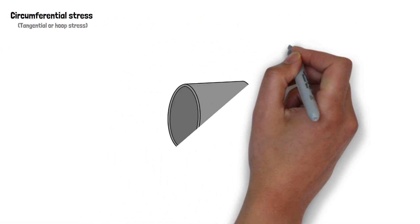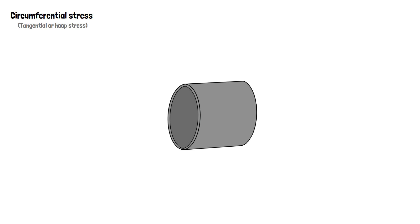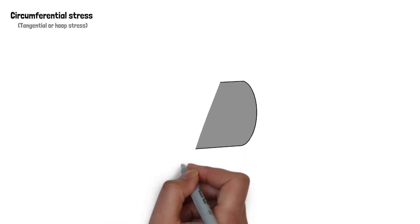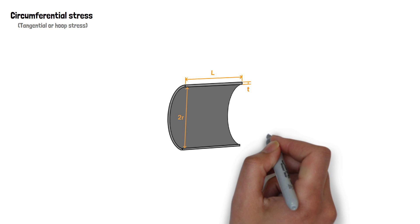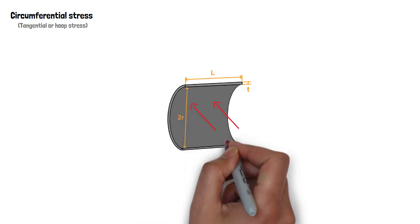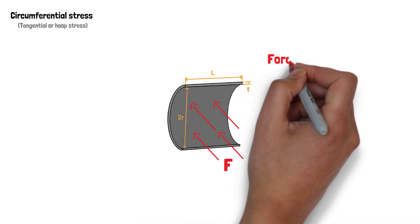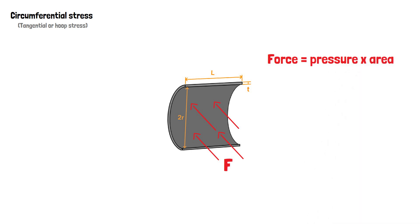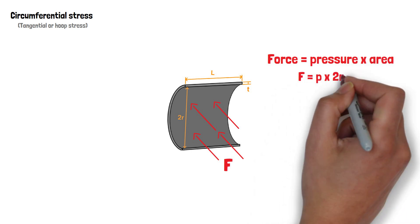Now, consider the force of the liquid or gas trying to split the cylinder in the circumferential direction. Imagine we're slicing the cylinder in half along its diameter. The force trying to split the cylinder, F, equals pressure times area, or P times 2R times L.